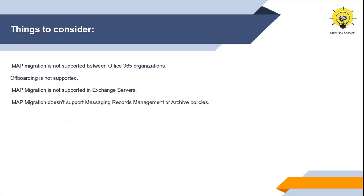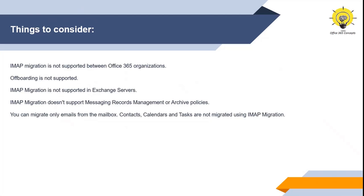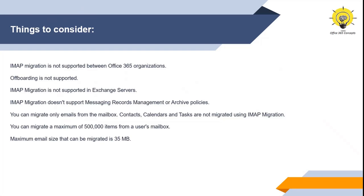IMAP migration doesn't support messaging records management or archive policies. If you have applied archive policies in your source email system and emails are moved to archive, IMAP migration will not migrate those emails. IMAP migration migrates only emails of the mailbox — it does not migrate calendar items, contacts, or tasks. This is very important to know. By using IMAP migration, we can migrate only emails. You can migrate a maximum of 500,000 emails from a user's mailbox, and the maximum size of an email that can be migrated using IMAP migration is 35 MB.